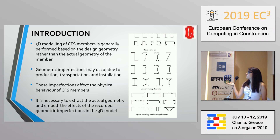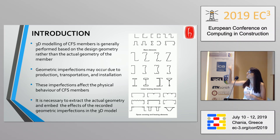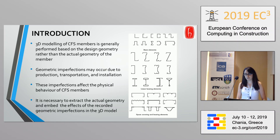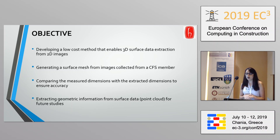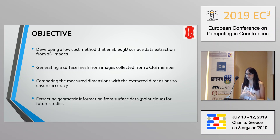Here on the right hand side you can see some common sections — the basic ones are on the top. We'll be dealing with a C section which is on the very top row of this image. Our objective was to develop a very low cost method to generate a 3D surface from 2D images for cold form steel members, by generating a surface mesh from the collected images.